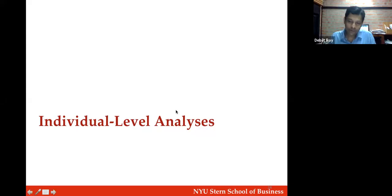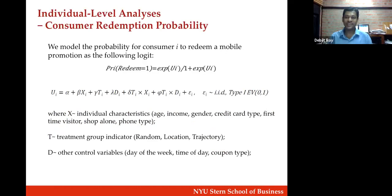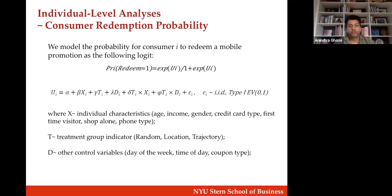The last question before moving on: did you consider explorers versus focus shoppers? Yes — exactly what I'll get to now. This is a simple logit-style choice model where we estimate the probability of redemption for a given customer as a function of various characteristics like age, income, gender, and credit card type, with treatment being one of the three: randomized, location, or trajectory. We control for day of week, time of day, coupon type, et cetera.